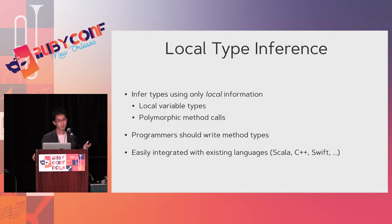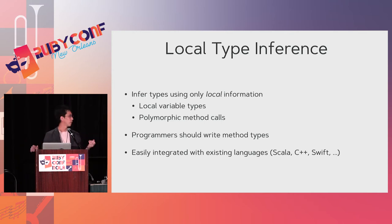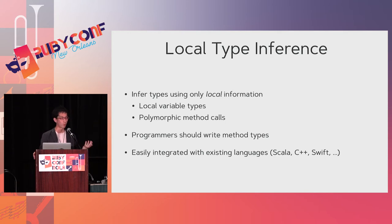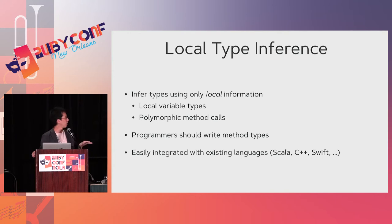We can consider local type inference — a weaker version of type inference. Instead of inferring everything in the program, it only infers local elements like local variable types, and infers types when polymorphic method calls are used. With local type inference, programmers write method types or class types, so we need some annotations in Ruby programs, but we don't have to write everything. A good thing is it is easily integrated with existing languages like C++, which recently introduced local type inference — and Scala and Swift also have it.